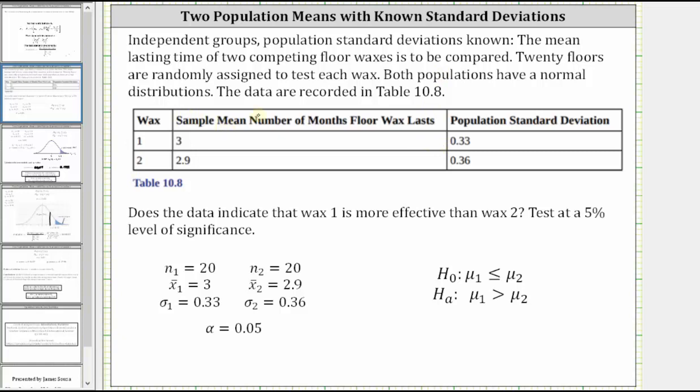We have the wax, the sample mean number of months floor wax lasts, and we have the population standard deviation. Does the data indicate that wax one is more effective than wax two? Test at a 5% level of significance.